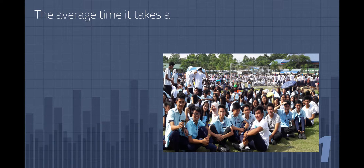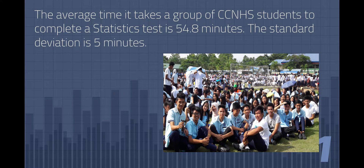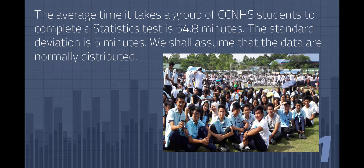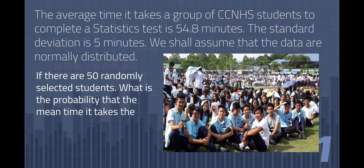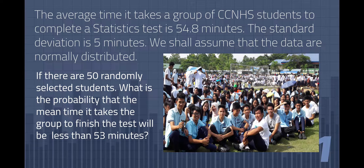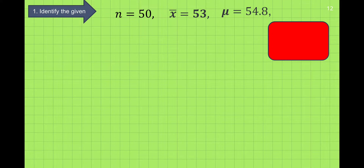For example, the average time it takes a group of CCNHS students to complete a statistics test is 54.8 minutes. The standard deviation is 5 minutes. We shall assume that the data are normally distributed. If there are 50 randomly selected students, what is the probability that the mean time it takes the group to finish the test will be less than 53 minutes? First, we identify the given: population n is 50, sample mean is 53, population mean is 54.8, and the standard deviation is 5.